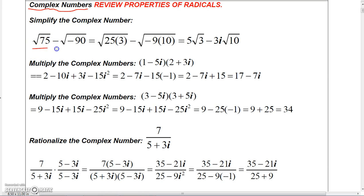...75 minus square root of negative 90. So to simplify the radical square root of 75, we look for a factor that's a perfect square. If we can't find one, then we just leave it like this, but 75 can be written as 25 times 3.